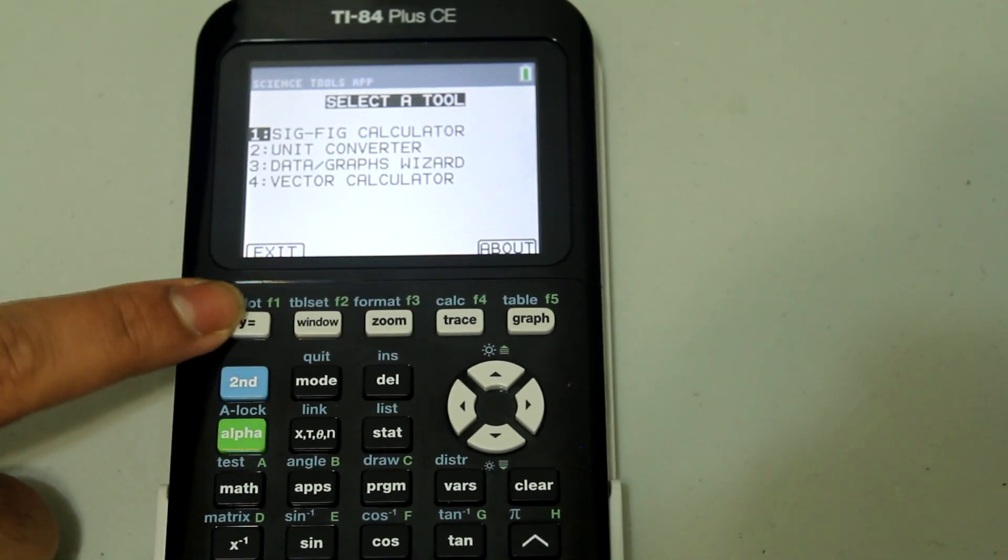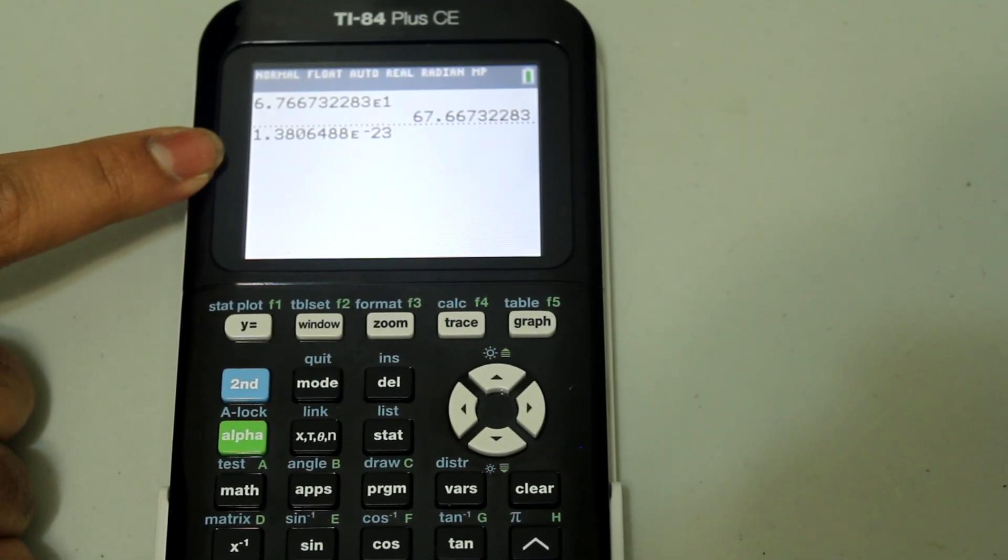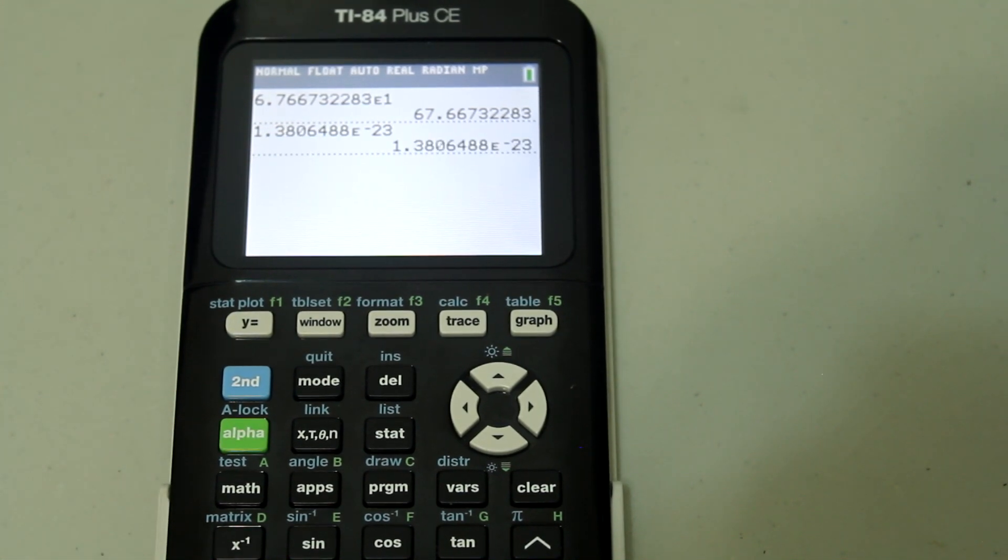Second mode again, and then Y equals under EXIT. And you see that on the home screen, you have the constant. And you can easily use that for a calculation.